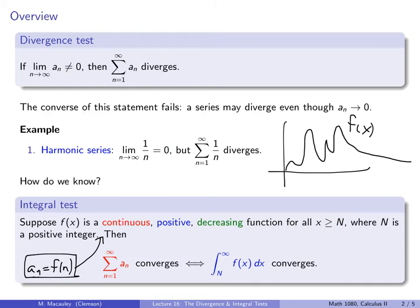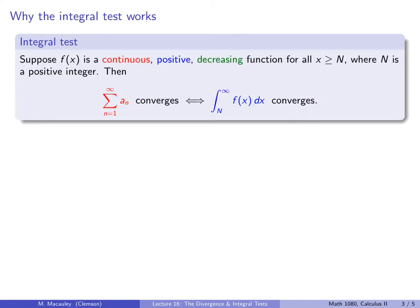Then the series of the a_n's converges if and only if the integral converges. This is saying that at the integer points, the sum of these heights converges if and only if the area under the curve is finite. The intuition is that you can approximate the area under the curve by boxes whose width is 1 and whose height is a_n.